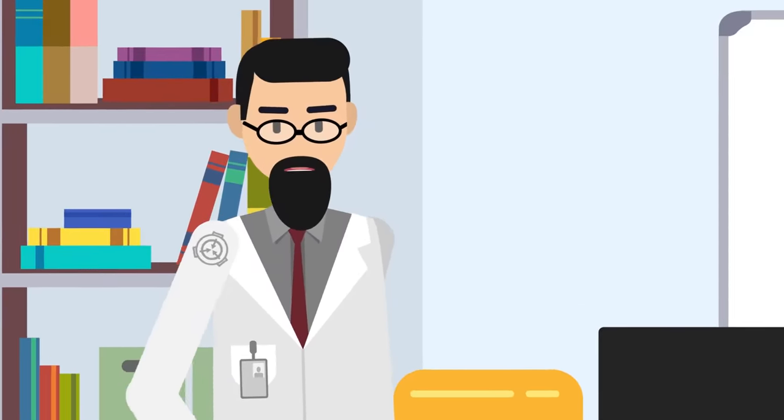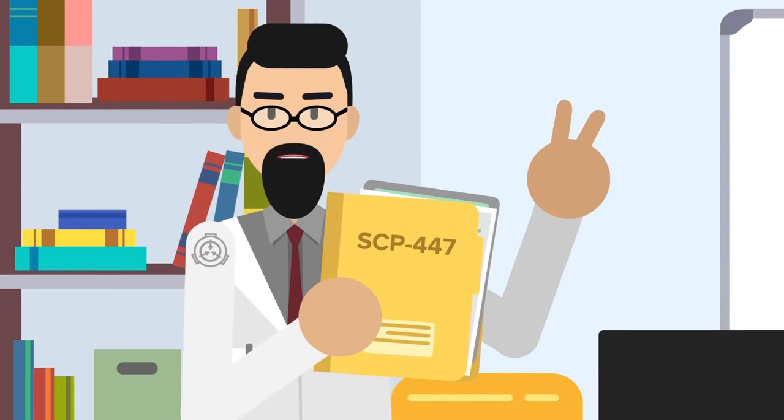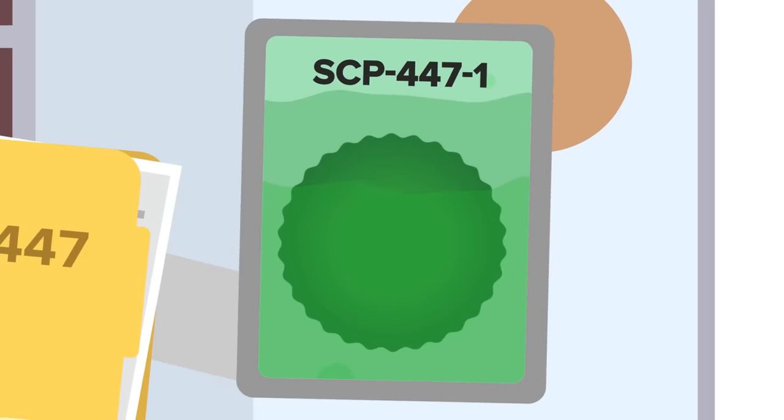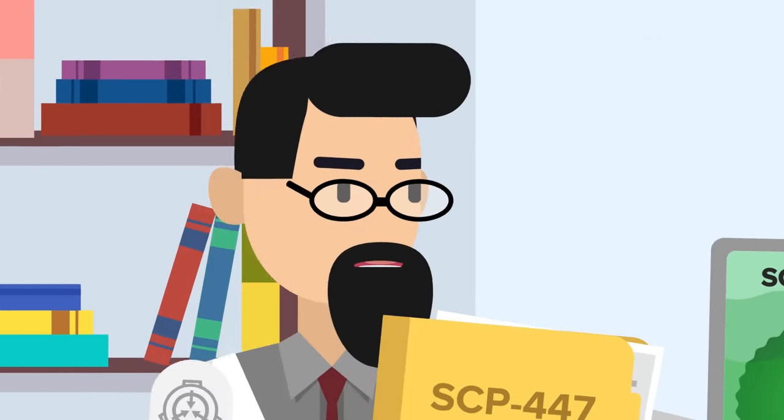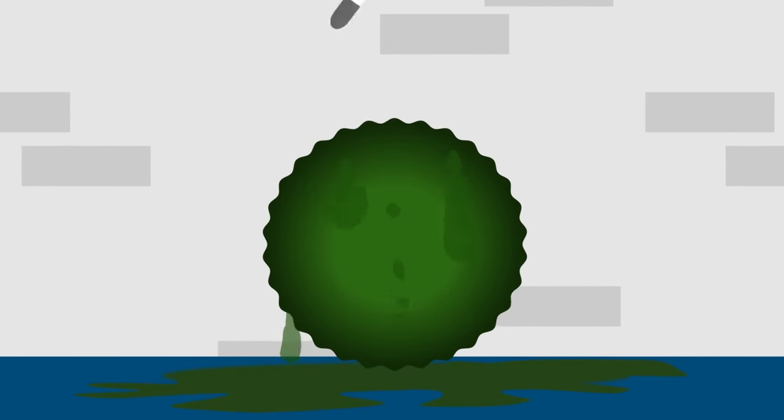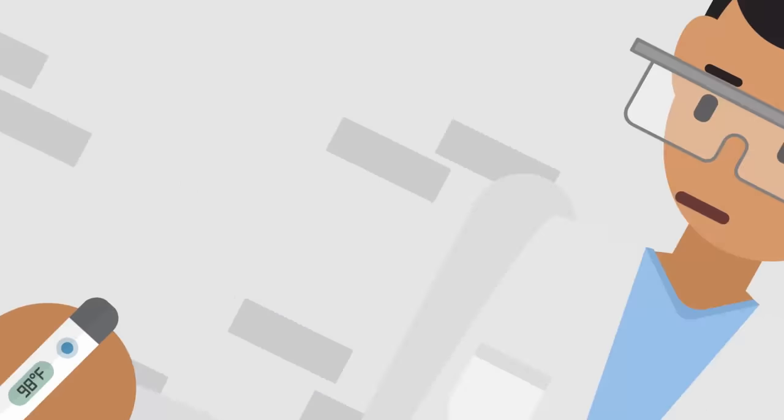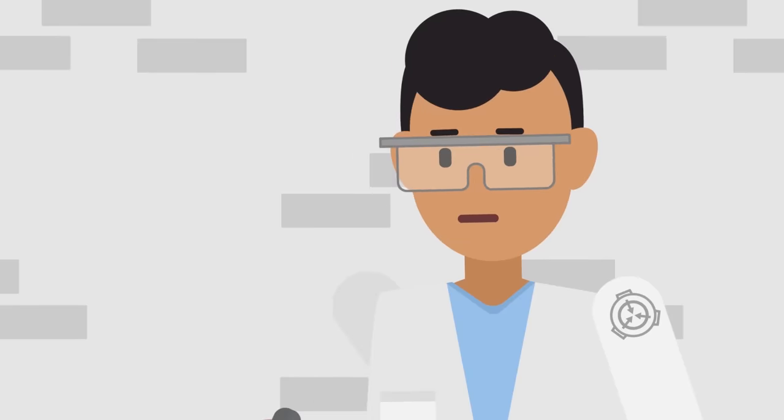Namely the capture and containment of SCP-447. This SCP is an anomaly in two parts. The first, SCP-447-1, is a sphere composed entirely of a green, slime-like substance. It's warm to the touch, the same sort of heat as an ordinary human body, and has no adverse or harmful effects on anyone that comes into contact with it.